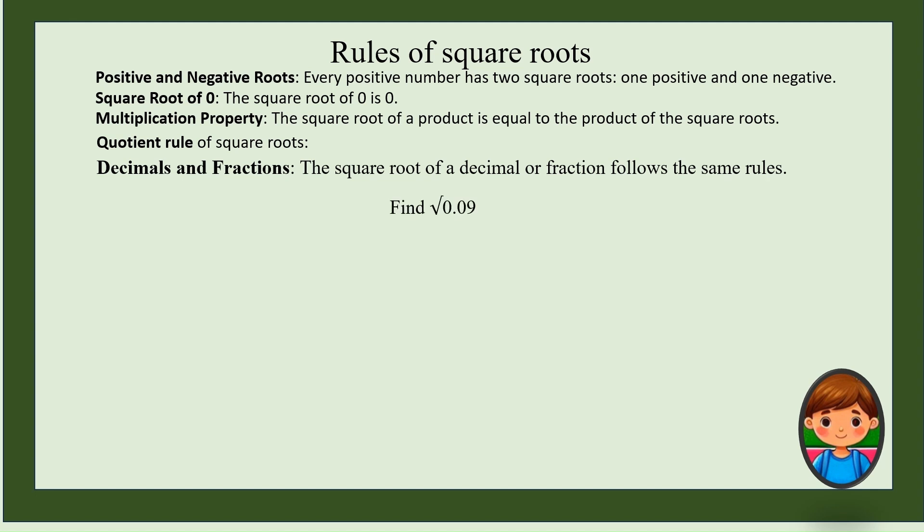Now we will take one more example. Find square root of 0.09. As we have done before, first convert this to a fraction. So 0.09 is same as 9 upon 100, and then you have to take the square root of the fraction.